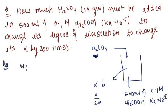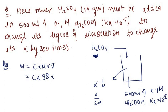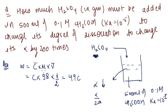Mass of H₂SO₄ = molarity × molar mass × volume = C × 98 × 0.5 L = 49C grams. So the mass of H₂SO₄ added is 49C grams, where C is the concentration in mol/L and the volume is 500 mL (0.5 L).